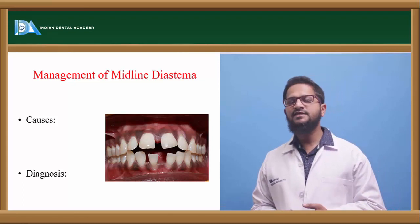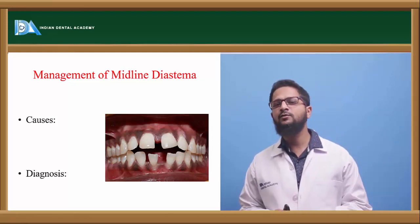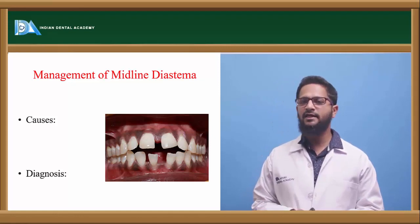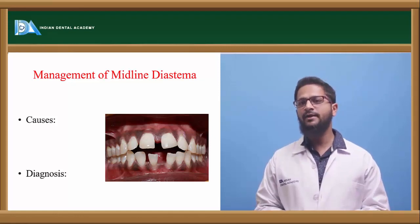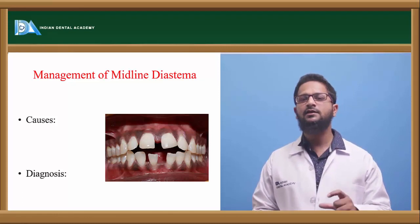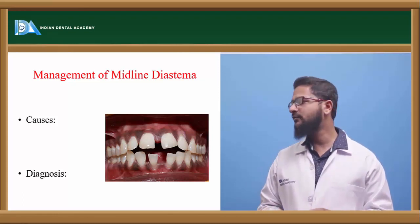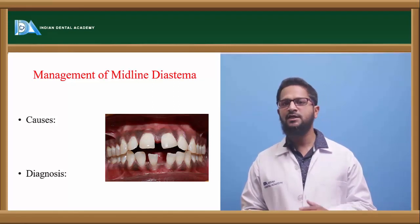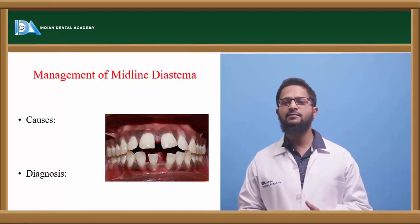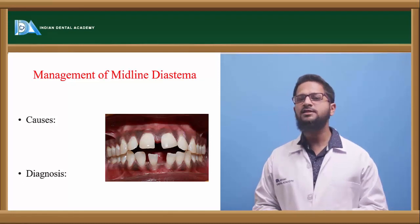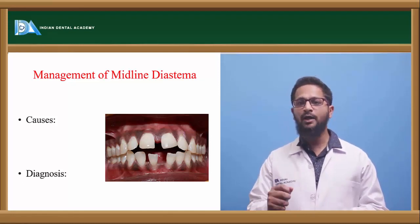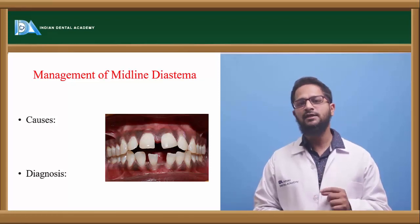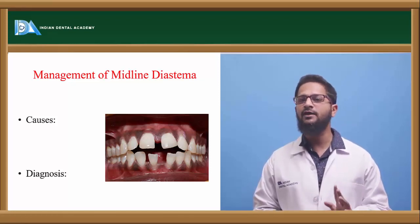For diagnosis, with simple clinical examination itself we can notice the presence of midline diastema. Apart from this we have to take impressions, study models, and if required, an intraoral periapical radiograph to see the presence of a thick labial frenum and spacing. One of the most commonly used tests to diagnose midline diastema is the blanch test. When the upper lip is pulled and stretched, blanching of the tissue in the incisive papillary region can be seen, confirming that thick labial frenum is present.